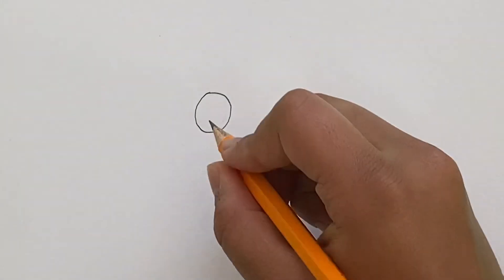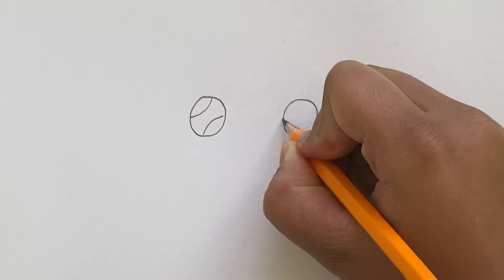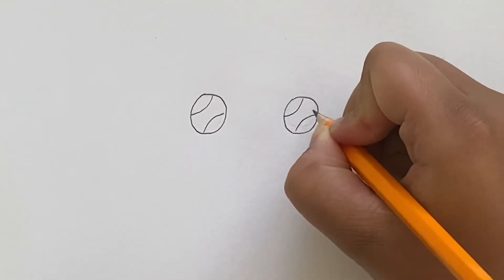Okay, so to start we're just going to draw two circle eyes, just like these. Now we're going to add the little details on the inside, so we're just going to add some curved lines, just like this.